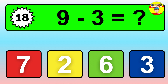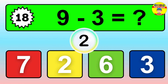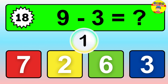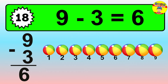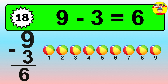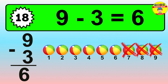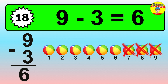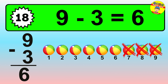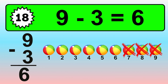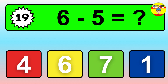Question eighteen: nine minus three equals what? So the answer is nine minus three is six. Let's count it: one, two, three, four, five, six.